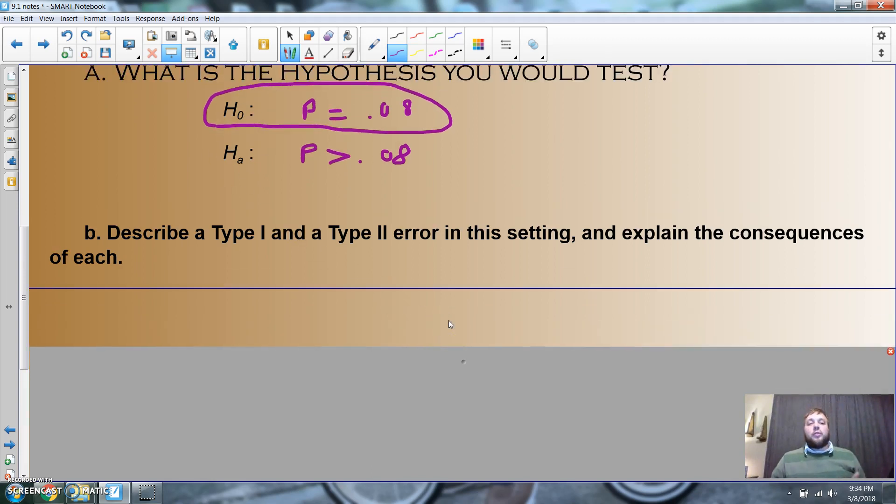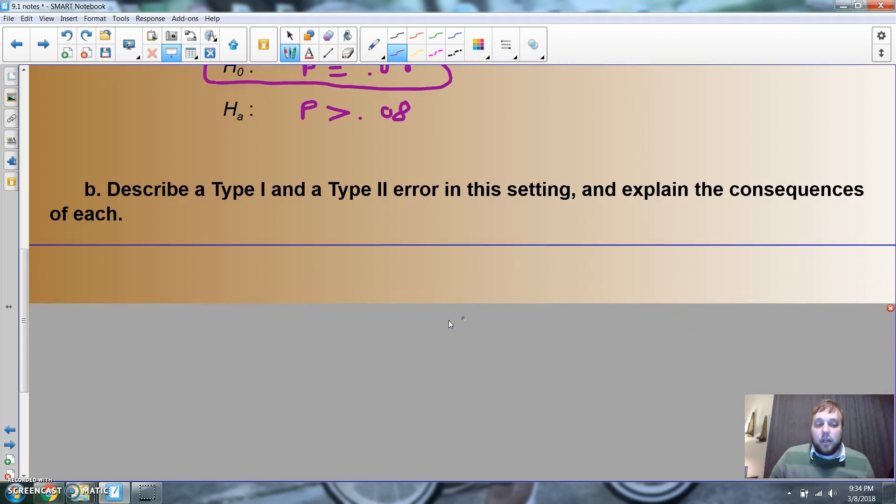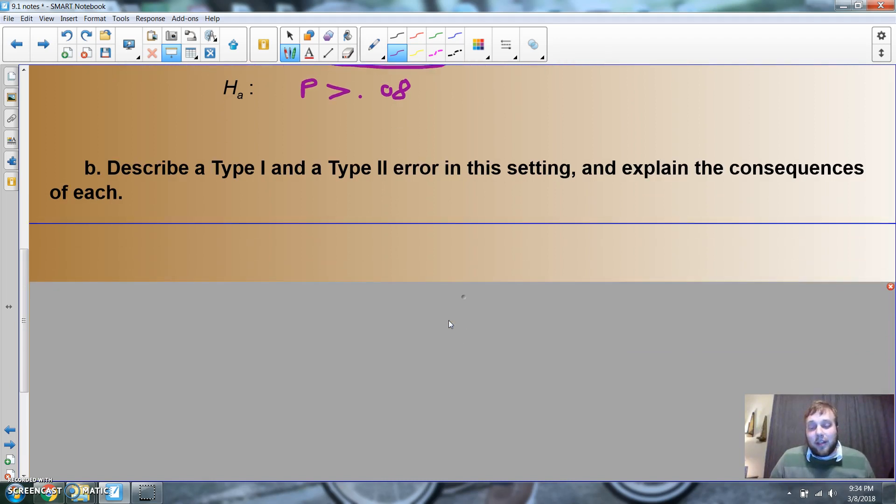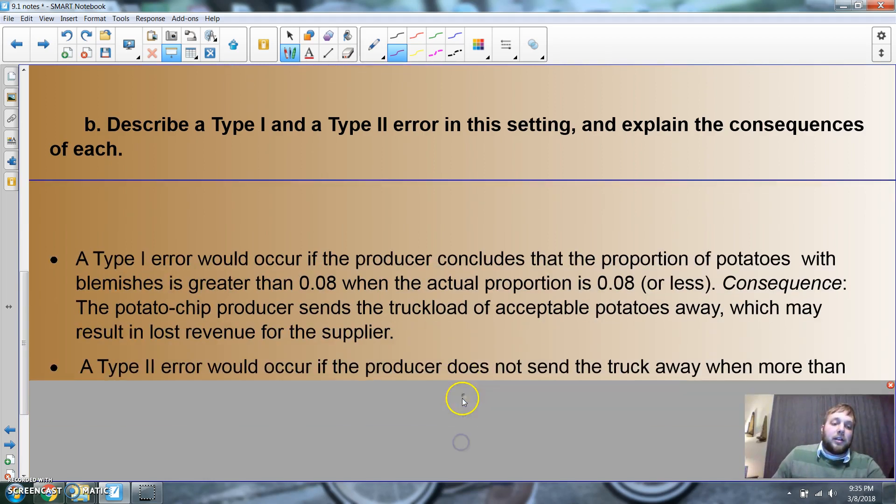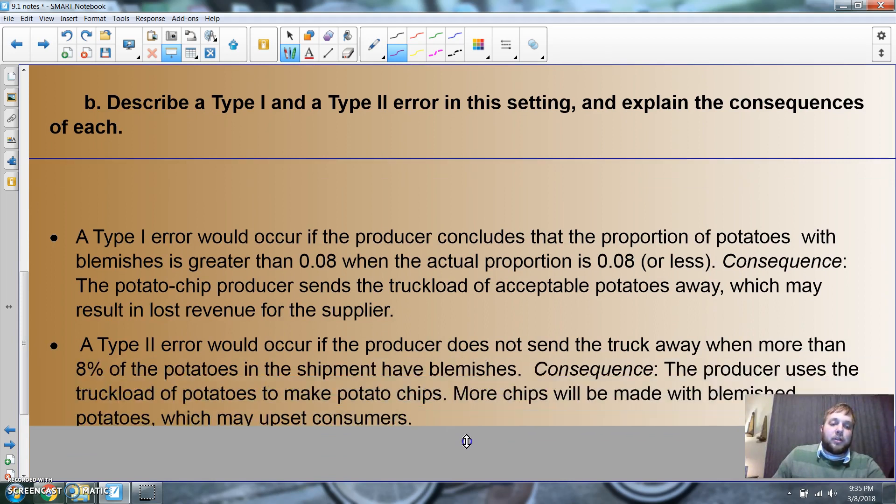Sometimes you got to toss around which is actually a worse error, Type I or Type II. For instance, people diagnosing cancer always face this - which is worse: to tell somebody they don't have cancer but they actually do, or to tell somebody they have cancer but they actually don't? Maybe that's a class discussion for you guys. Here is the official writing of a Type I and Type II. You can pause it. See you later.